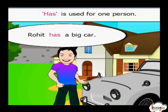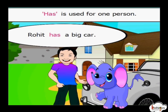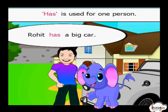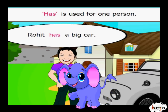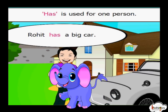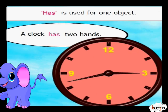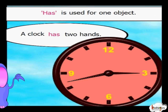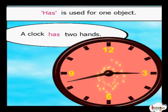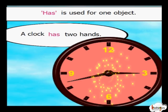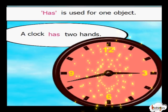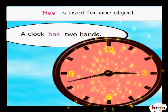Rohit has a big car. The king has two elephants. King is one person, so we say 'the king has'. A clock has two hands. 'Has' can be used with the name of one object. A clock means one object.